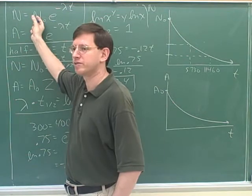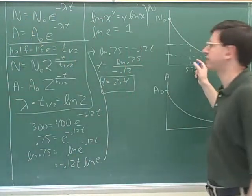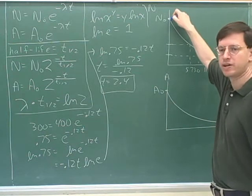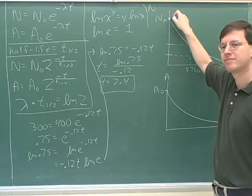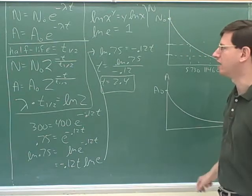N sub zero is the original number of nuclei, and then after time t, N is how many remain. You can see that from our graph, right? N sub zero is our original number of nuclei, and then N is how much we have left after time has gone on. Now how about A and A sub zero?